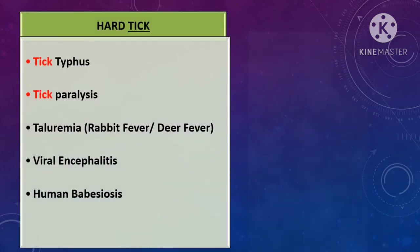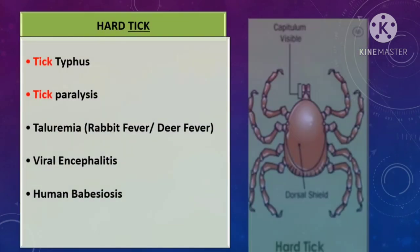River blindness is the second most common cause of infectious blindness after trachoma. Now we will learn about the hard tick. The difference between the hard tick and the soft tick is that the hard tick has a dorsal shield, which makes it hard, while this shield is absent in the soft tick.